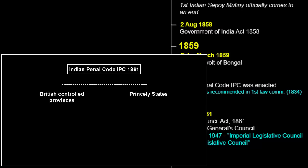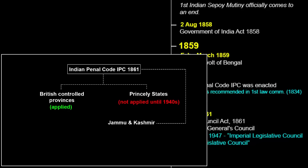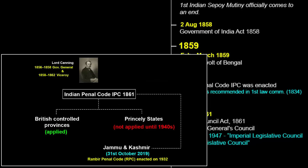In 1860, the Indian Penal Code was enacted, though it came into force in 1862. It had been recommended by the first Law Commission of India established in 1834. The IPC did not apply to princely states, which had their own codes and legal systems until the 1940s. As we know, the IPC came into force in Jammu and Kashmir on 31st October 2019, replacing the state's Ranbir Penal Code. The IPC was rolled out during the tenure of Viceroy Lord Canning but was prepared and drafted during the tenure of Governor General William Bentinck in 1834.